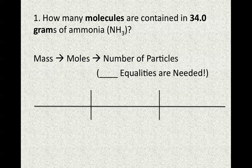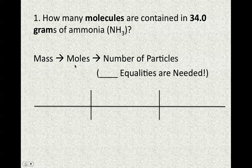Our first question is: how many molecules are contained in 34 grams of ammonia? We're working with one substance, and our two units are molecules and grams. Neither of those are moles, which means we're going to have to use two conversion factors and go through moles. Our starting unit is mass — we're going to go from mass to moles, and then from moles to our target unit, the number of particles. Two arrows means two equalities.